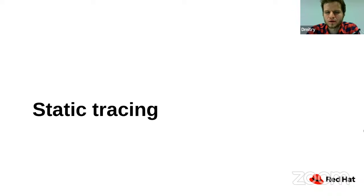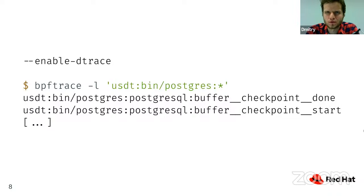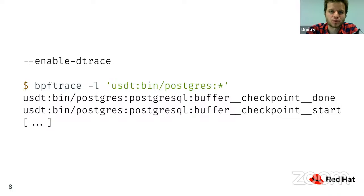In Postgres, there are already some static trace points defined, usually enabled in distributions with the --enable-dtrace configuration option. You can verify them and see what trace points you get using bpftrace with the -l command, listing all user static trace points. There are about 100 trace points in Postgres — not an overwhelming amount, but decent coverage of what's happening.